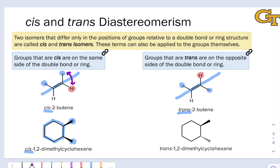Likewise, if I exchange one of the methyls in cis-1,2-dimethylcyclohexane with the hydrogen linked to its carbon — highlighted in red by analogy — I end up with a trans isomer where the two methyl groups are now on opposite sides of the plane formed by the carbons of the six-membered ring. We have one methyl above that plane and one methyl below. This is trans-1,2-dimethylcyclohexane.